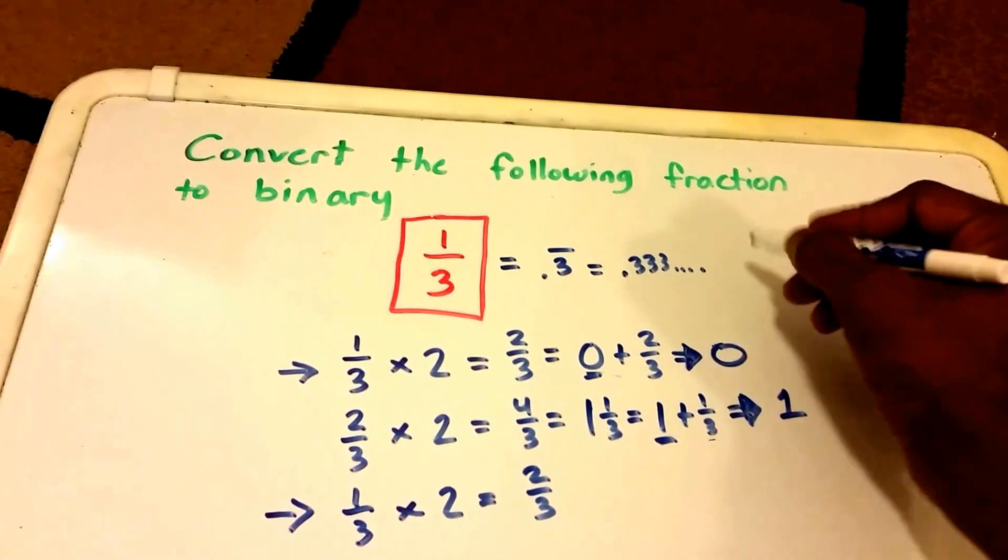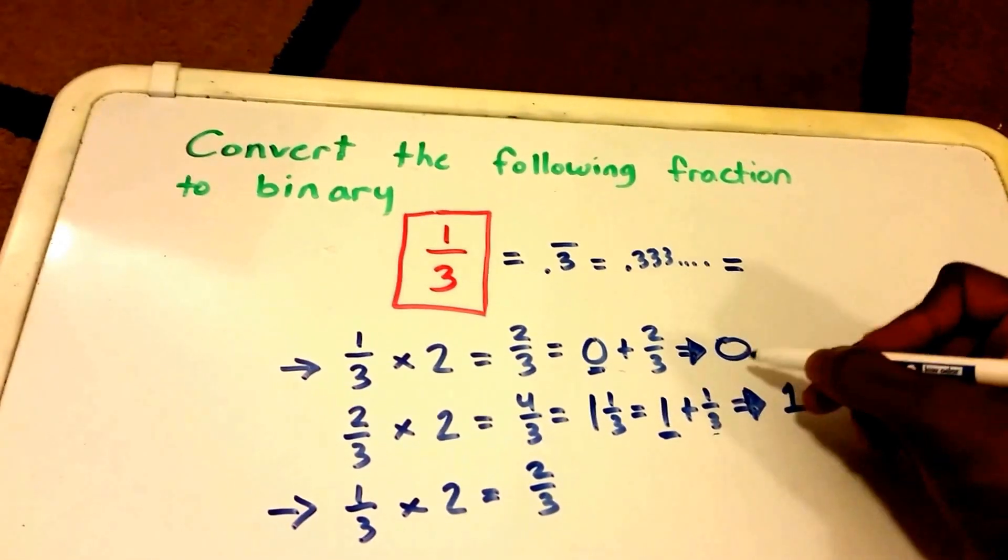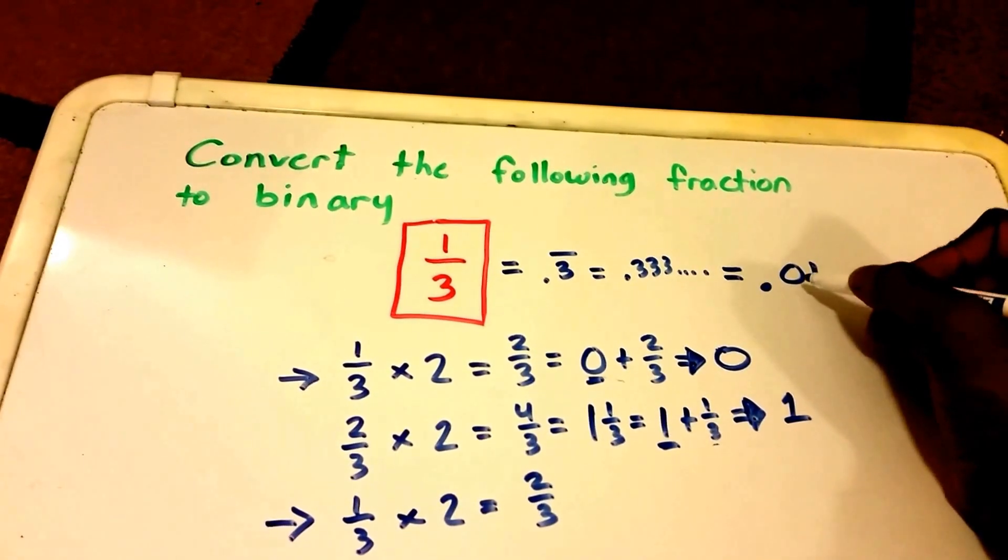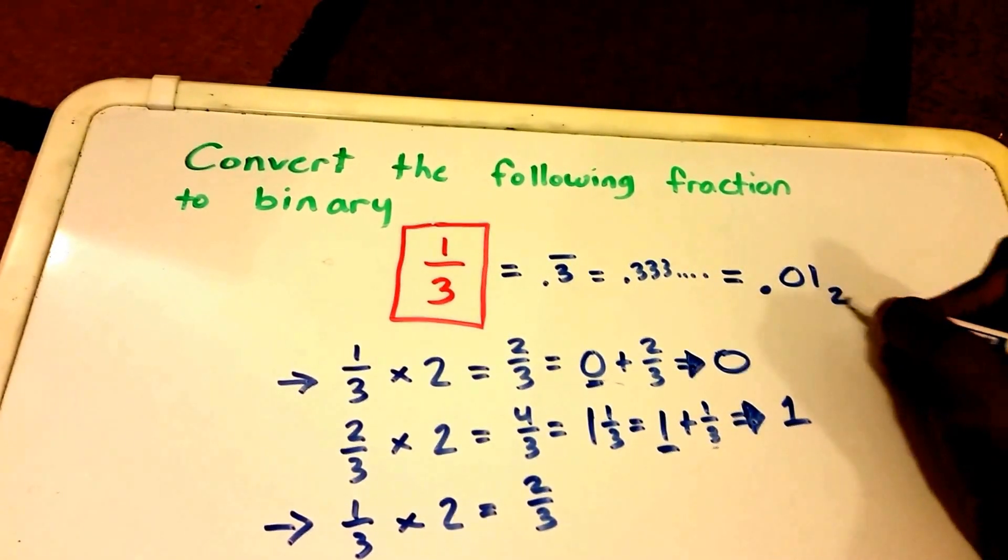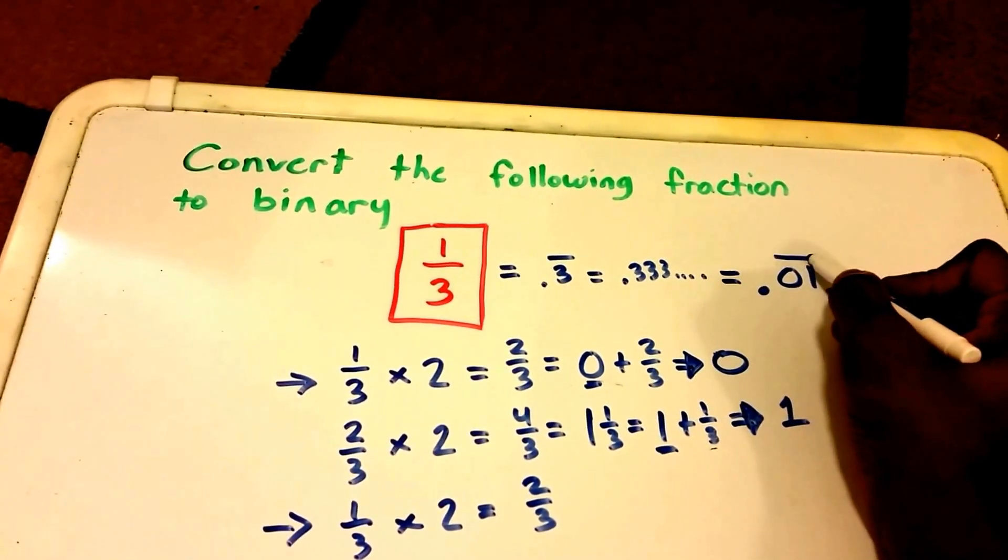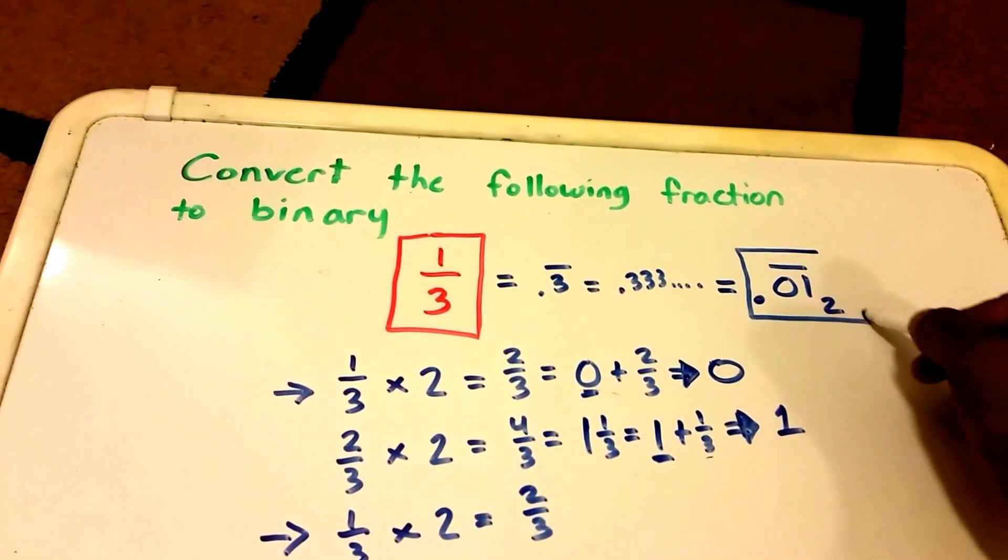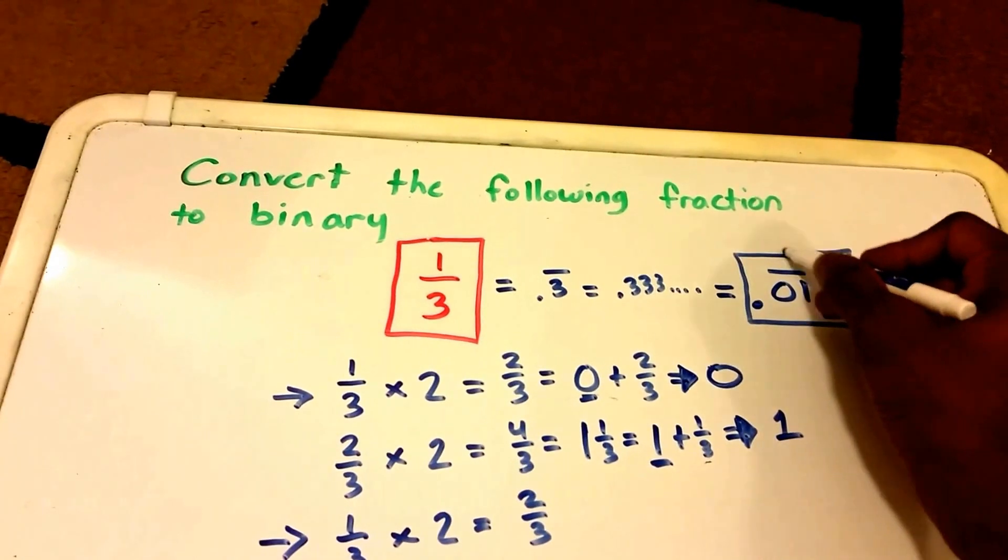And so that's our answer: 1/3 in binary is 0.01 repeating, or another way of writing is 0.0101... all the way to infinity.